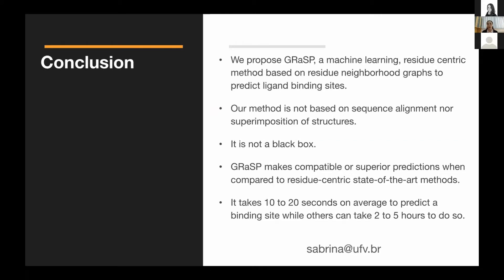GRASP makes comparable or superior predictions when compared to residue-centric methods and also when compared to pocket-centric methods. Last but not least, GRASP takes 10 to 20 seconds on average to predict a binding site for a protein structure, while the state-of-the-art residue-centric competitor takes two to five hours to do the same task. That's why we say that our method is scalable.